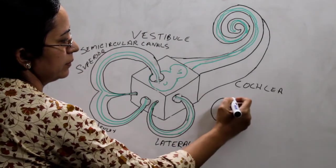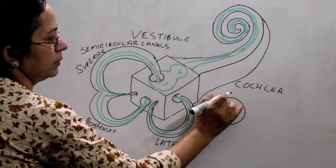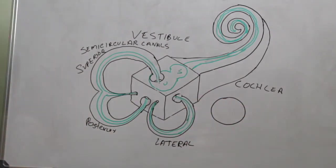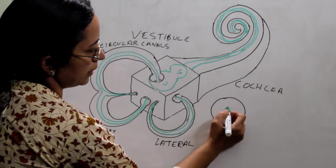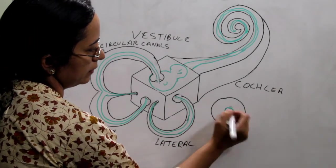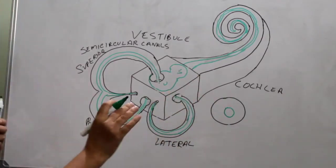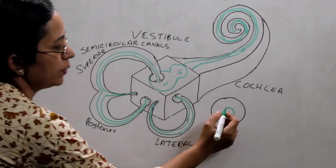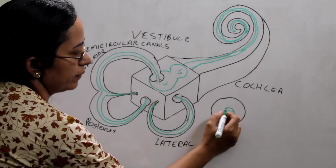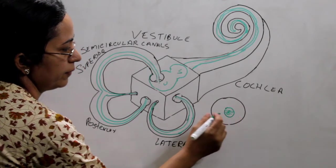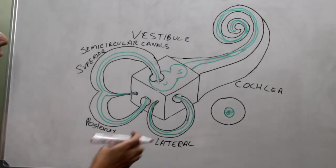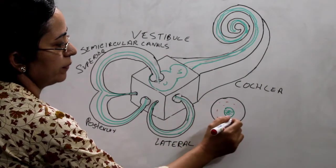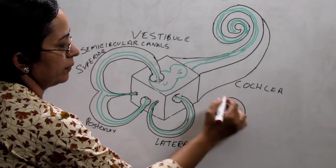If this is the bony labyrinth, inside it is the membranous labyrinth. The membranous labyrinth is filled with endolymph. And between the bony labyrinth and the membranous labyrinth, the space is filled with perilymph.